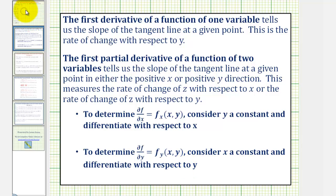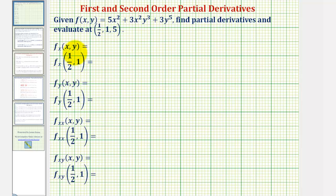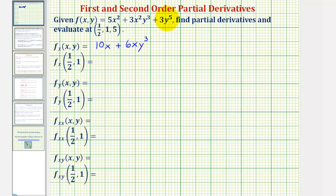Going back to our example, we'll begin by determining the partial derivative with respect to x. We'll differentiate each term with respect to x, treating y as a constant. The derivative of 5x² with respect to x would be 10x, plus the derivative of 3x²y³ with respect to x — treating y³ as a constant — we multiply by two and subtract one from the exponent on x, giving us 6xy³. And then the derivative of 3y⁵ with respect to x would be zero, because we're treating y as a constant.